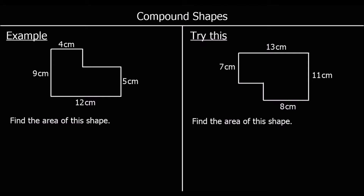In the first example, we've got a shape that's made up of two rectangles. To find the area of a shape made up of two rectangles, we need to split it back into two rectangles. It doesn't matter which way we split it — we could split along here or down here. Either way, we'd get the same answer.